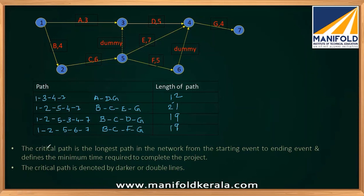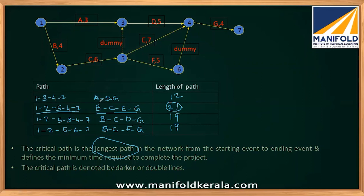Now we can see the definition of critical path. The critical path is the longest path. Among all the paths, the longest is 21 weeks — which is B-C-E-G (nodes 1-2-5-4-7). Any delay happening for the activities on this path will delay the completion of the entire project.